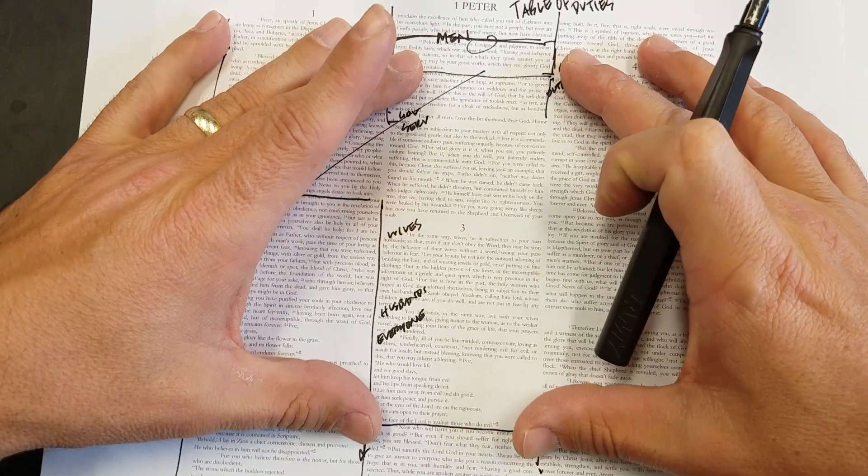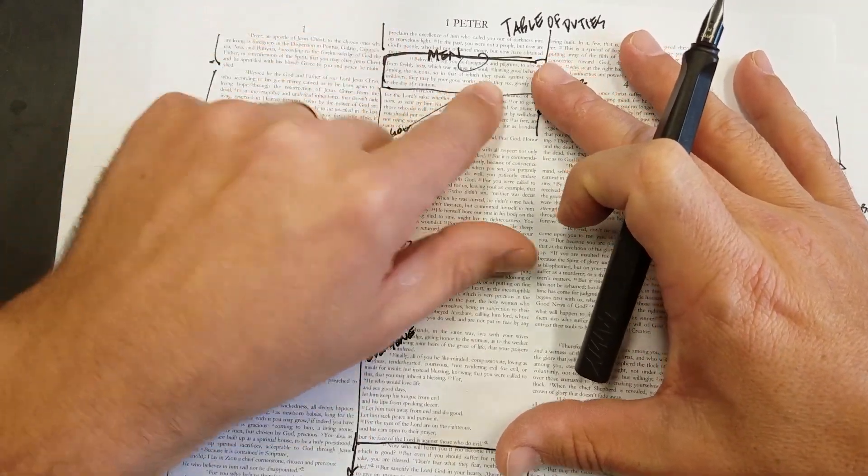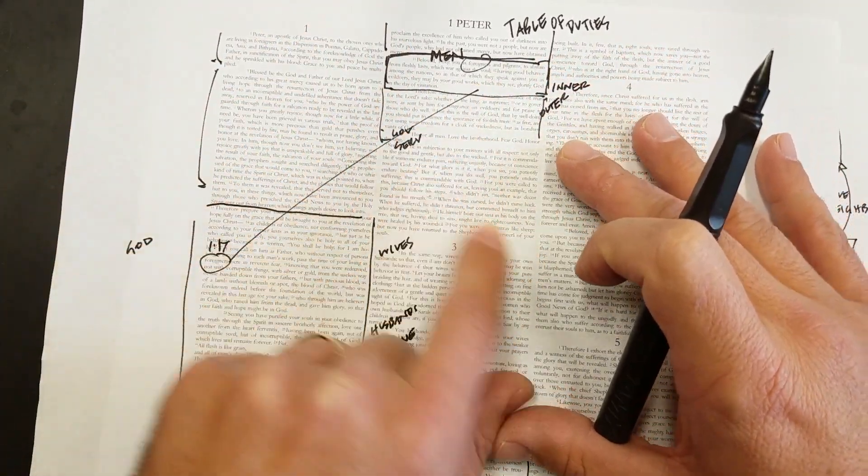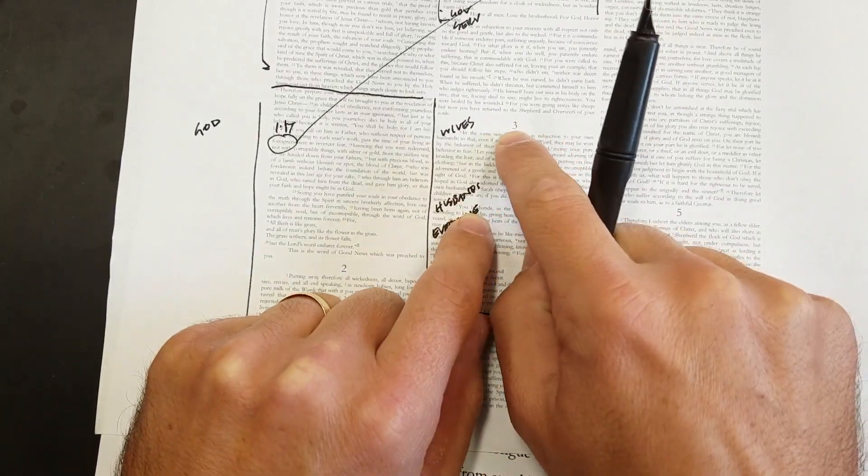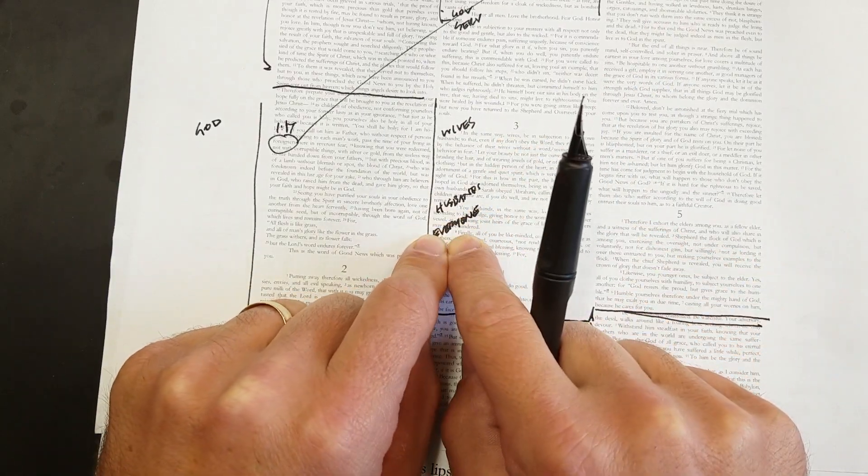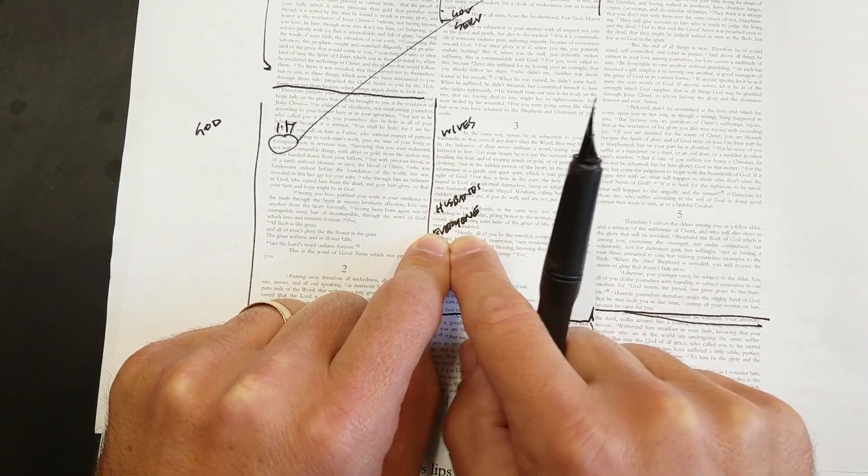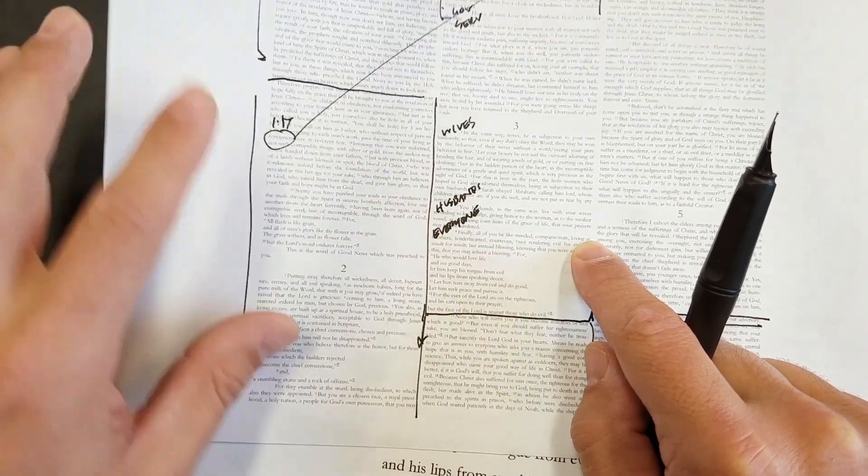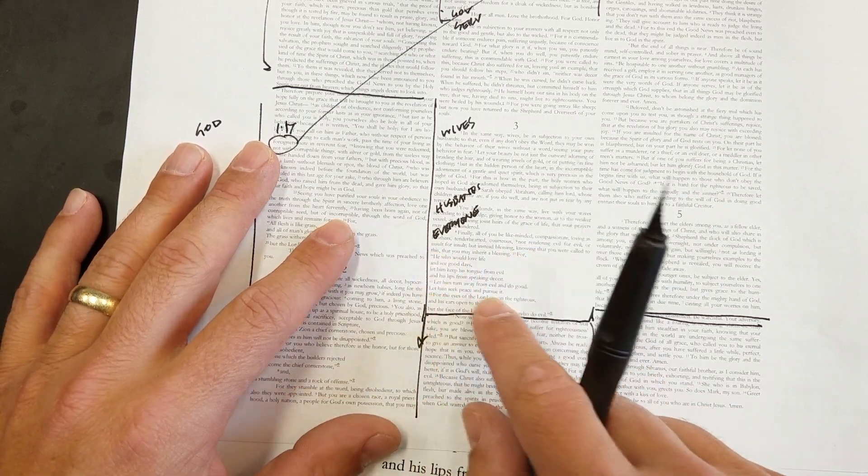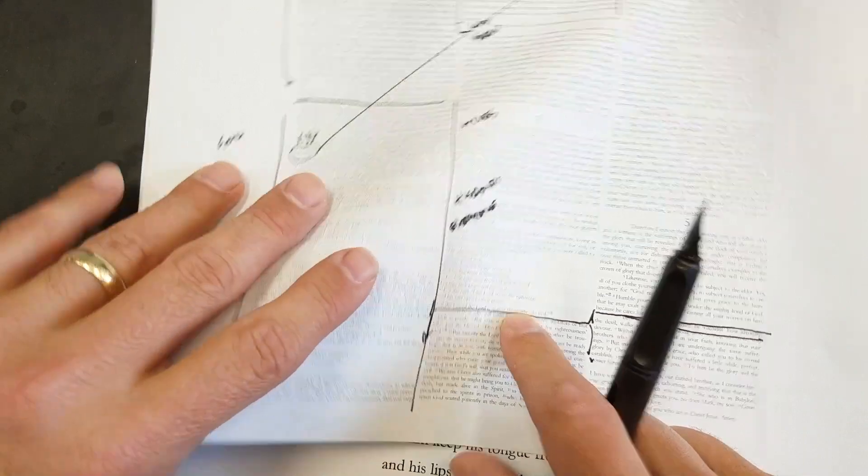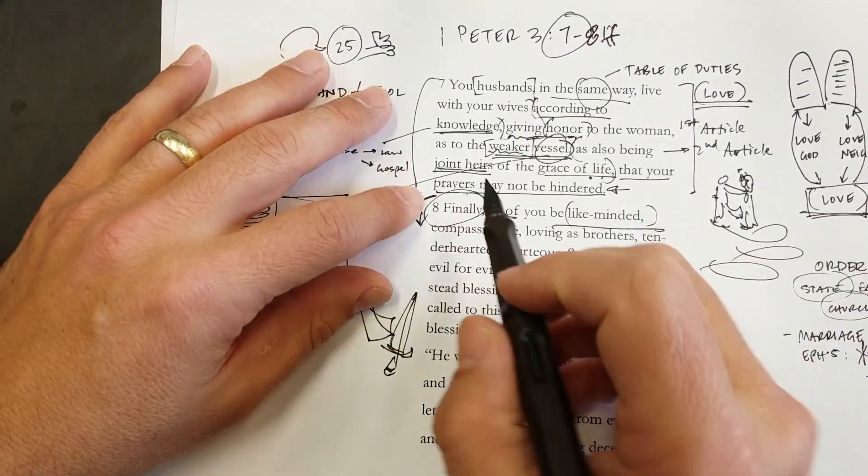And we have this table of duties section here right in the middle of the book and we talked about all people, government, servants, wives, husbands. And now we start with chapter 3, verse 8, instructions for everyone, remember? And so it's going to be a kind of a summary and, in fact, the longest Old Testament quote in the entire book of 1 Peter right here. So, finally.